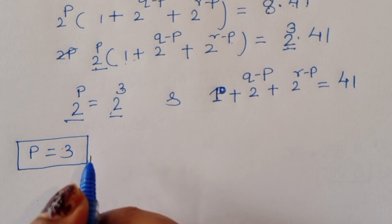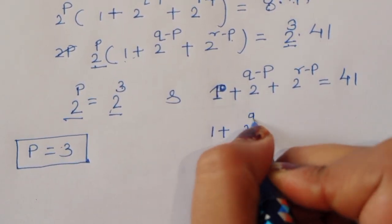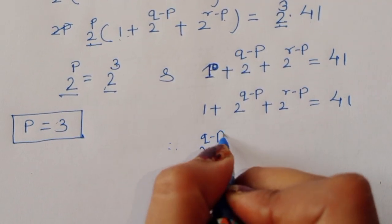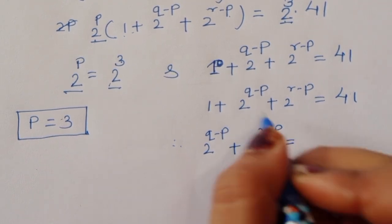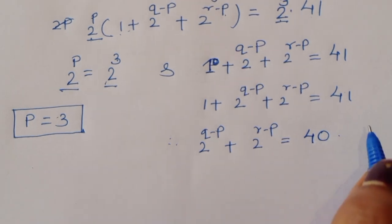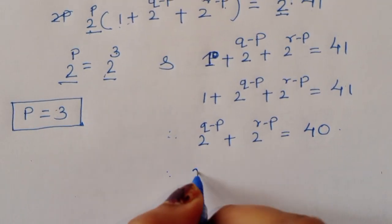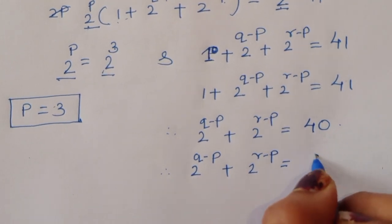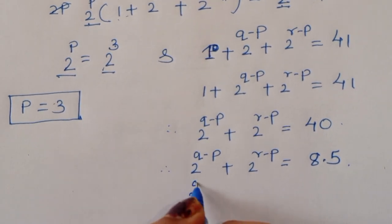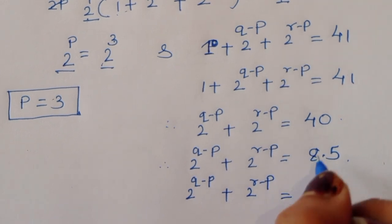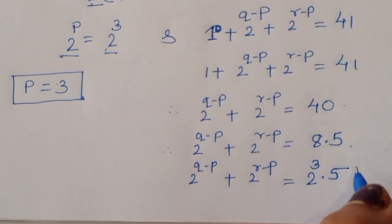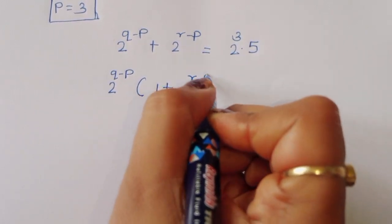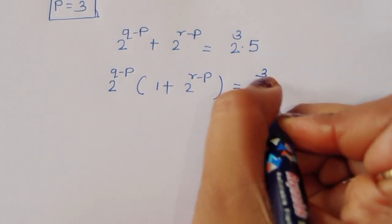Now for the next term: 1 plus 2 power Q minus P plus 2 power R minus P equals 41. Subtracting 1, we get 2 power Q minus P plus 2 power R minus P equals 40. We can write 40 as 2 power 3 times 5. Taking 2 power Q minus P common, we get 1 plus 2 power R minus Q equals 2 power 3 times 5.